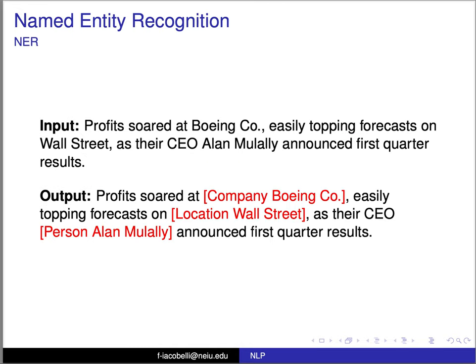There are many types of tagging. For example, you can have named entity recognition, where you tag only entities. Given an input like 'Profit soars Boeing company, easily topping forecasters on Wall Street as their CEO Alan Mulally announced first quarter results,' the output tells us that Boeing Co. is a company, Wall Street is a location, and Alan Mulally is a person. This is another kind of tagging, and for any kind of tagging, the process we're going to use to infer the tagging is going to be the same.